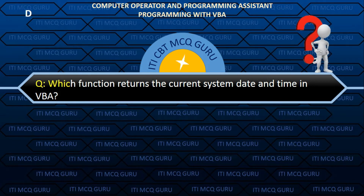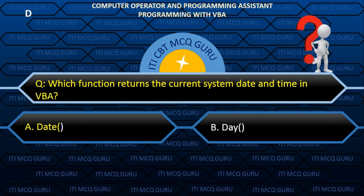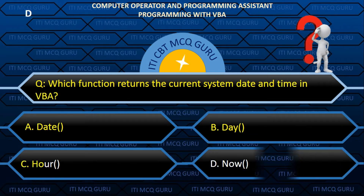Which function returns the current system date and time in VBA? Answer: D. NOW.